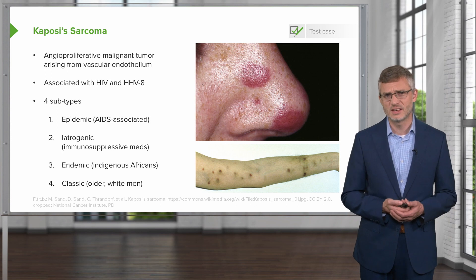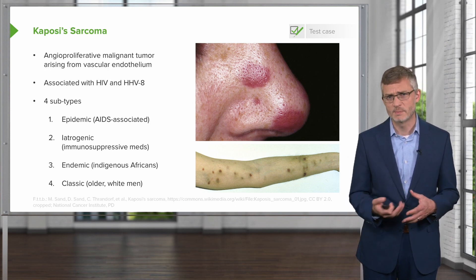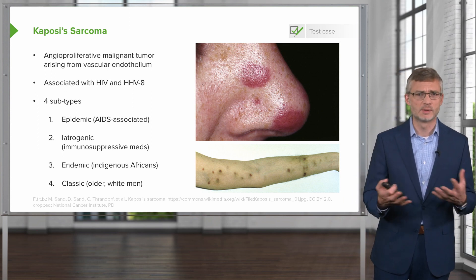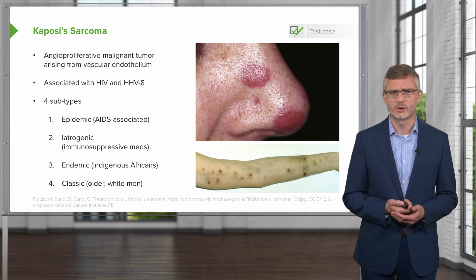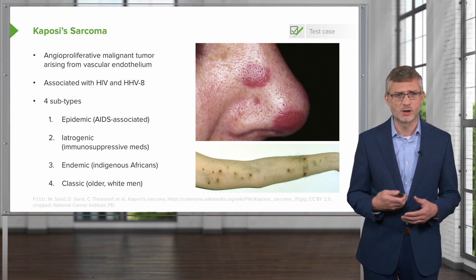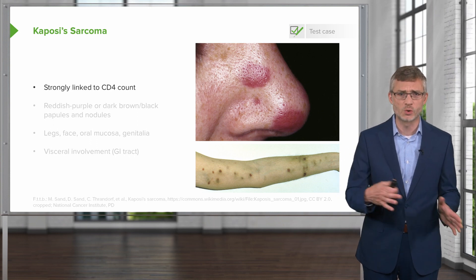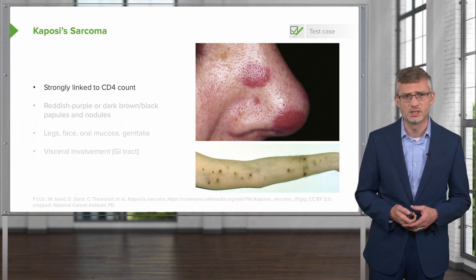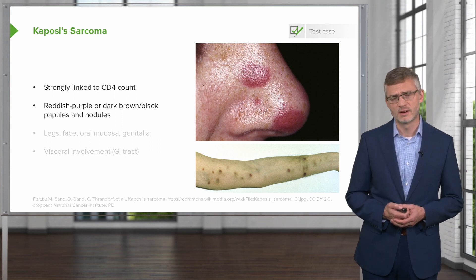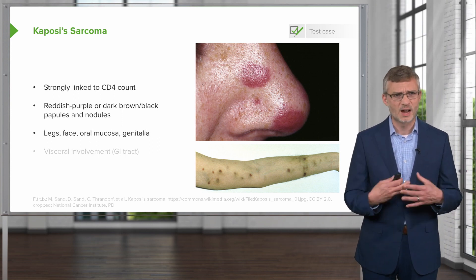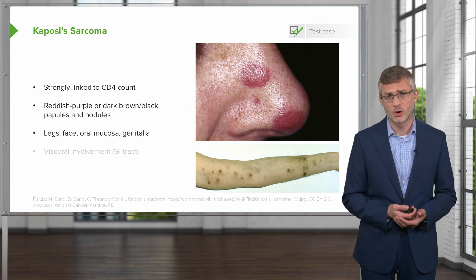You can see the lesions depicted here — they're violaceous in color, and they can be flat or papular. You'll see them in a variety of locations; you're not looking for them in sun-exposed areas. It's also important to remember that they can have mucosal involvement. These lesions are strongly linked to the CD4 count, so the lower your CD4 count, the more likely these lesions are to emerge. They are commonly associated with the legs, though you may see them on the face, oral mucosa, and genitalia.